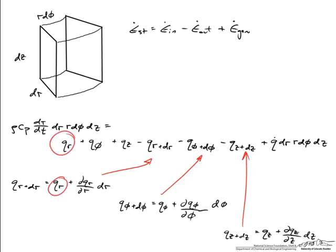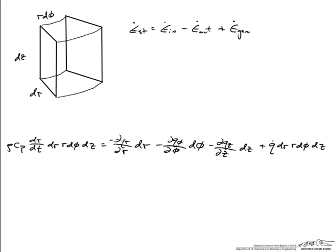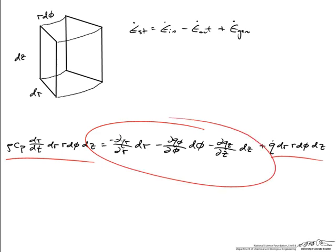When I make the substitution, what we'll find is that these Q_r's will drop out because of the negative sign, and the Q_phi's just as well, and Q_z's will also drop out because of the negative signs in the expression. So here's what we're left with after making the substitution. On the left is the energy storage term. On the right, the last term is the energy generation term. And these three terms now in the middle represent the net rate at which energy is entering the control volume.